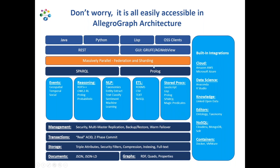I'm showing this big picture architecture here just to note that at the bottom of the stack we are an RDF graph database. We do quads, and we can also attach properties to our triples — what we call triple attributes — so in that sense it's already also a property graph database. We now also natively take in JSON and JSON-LD and store them as source objects, making it also a document store.